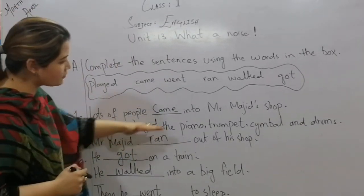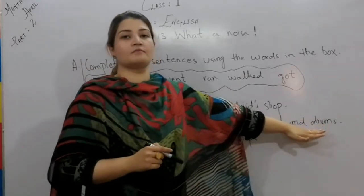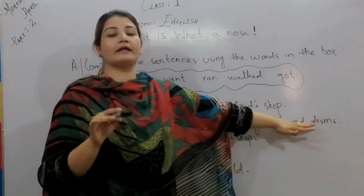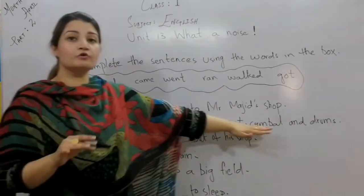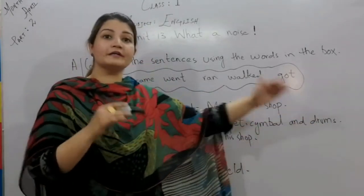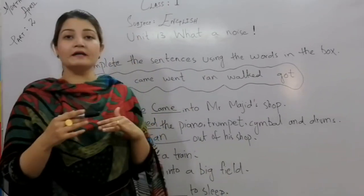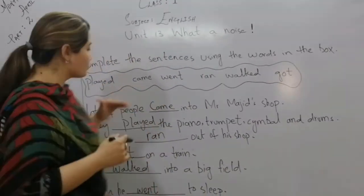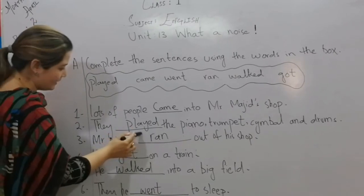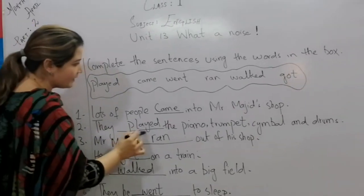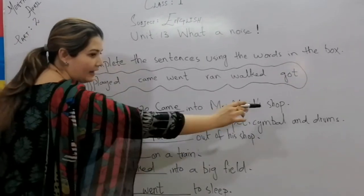The next sentence is: 'They ___ the piano, trumpet, cymbals and drums.' If you remember from the chapter, the woman played something and the boy played something. So the answer is: They played the piano, trumpet, cymbals and drums.